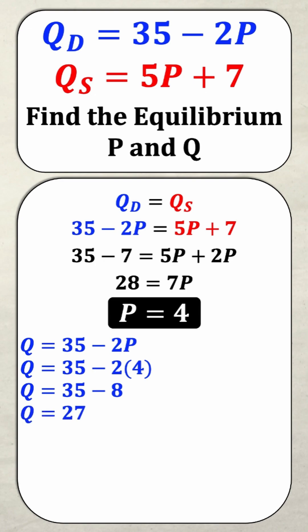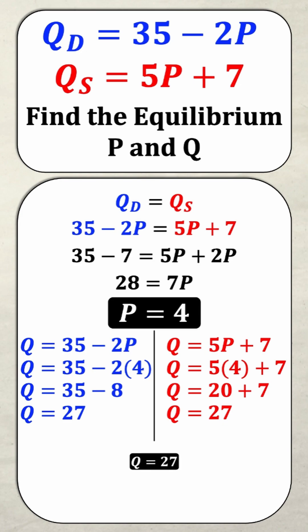Now I told you that you could substitute it into the demand equation or the supply equation and it would give you the same answer. But rather than going over all that math, I just did it for you. You can take a look. It's going to give you the same answer. And in this case, the equilibrium quantity is 27. Did you get this one right? Let me know in the comments.